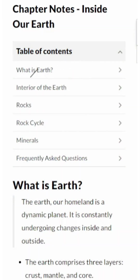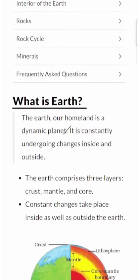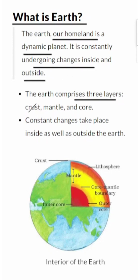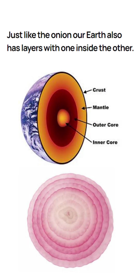What is Earth? It is our ultimate homeland — a dynamic and ever-changing world, both on its surface and beneath it. The Earth can be divided into three main layers: the crust, the mantle, and the core. These layers are like the different layers of an onion, each with its own unique characteristics.